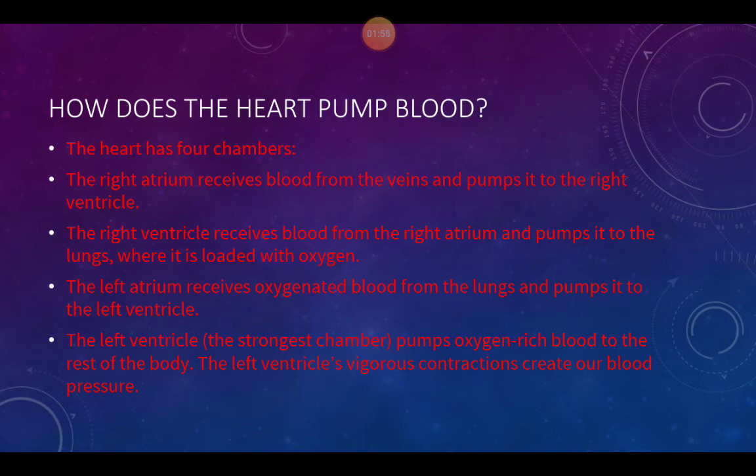The right ventricle is below the right atrium. It receives blood from the right atrium and pumps it to the lungs, where it is loaded with oxygen. This blood travels in arteries to the lungs to get oxygen.